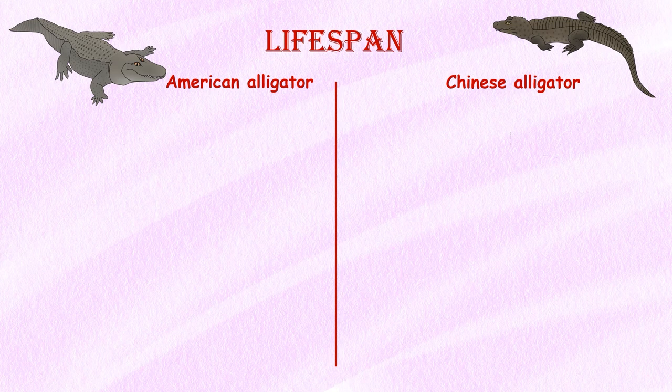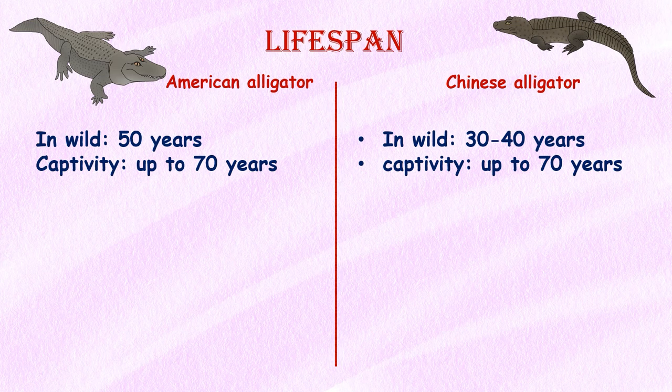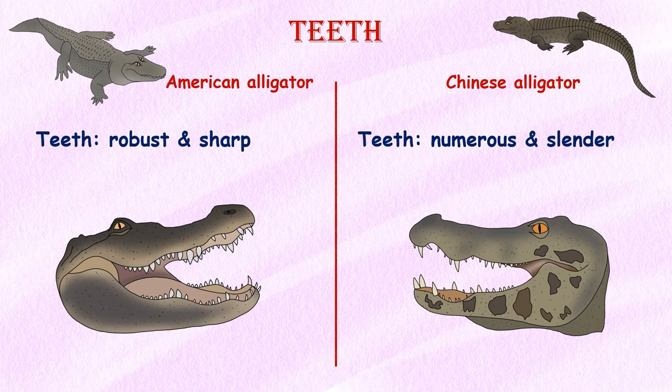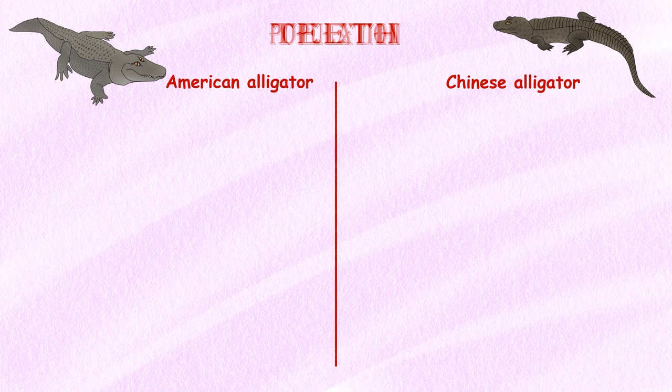Lifespan. American alligators can live for over 50 years in the wild, while the lifespan of Chinese alligators is estimated to be around 30–40 years. Both can live up to 70 years in captivity. Teeth. American alligators have powerful, robust, and sharp teeth, but the teeth of the Chinese alligator are more numerous and slender compared to those of the American alligator.